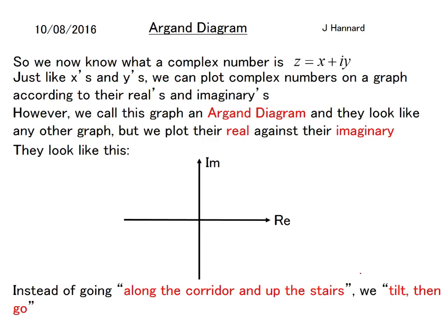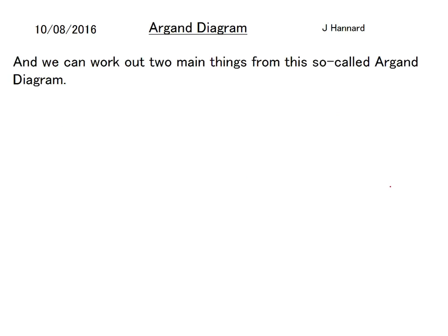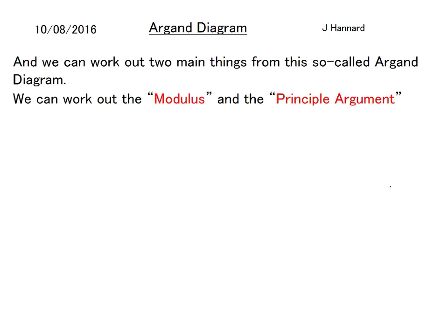Instead of going along the corridor and up the stairs, it's all to do with angles, and it all comes from a reference point at the origin. We always start pointing right and then we can tilt. So you tilt and then you go — that could be a point on an Argand diagram. From this we can work out two main things: the modulus and the principal argument. We need those two to actually plot the Argand diagram.